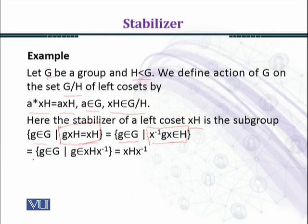Which is equal to g belonging to G such that g belongs to xHx inverse. We multiply x on the left side and x inverse on the right hand side of both sides.